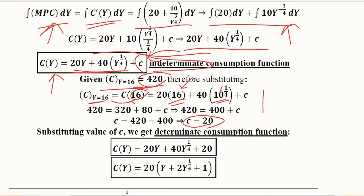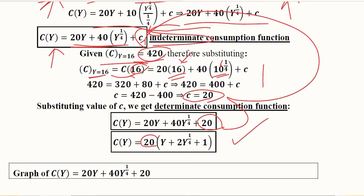The arbitrary constant is now determined. It has a value of 20. We substitute it back into its place and get the total consumption function. We take 20 as a common factor, which simplifies the whole expression.